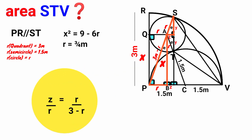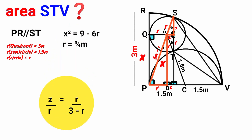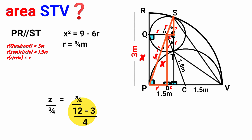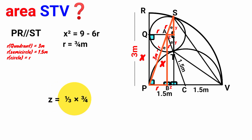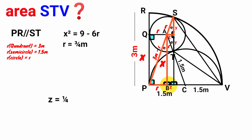So z/r = r/(3 − r). We found r = 3/4, so substituting: z/(3/4) = (3/4)/(3 − 3/4). Now 3 − 3/4 = (12 − 3)/4 = 9/4. So z/(3/4) = (3/4)/(9/4) = 3/9 = 1/3. Multiplying both sides by 3/4: z = (1/3)(3/4) = 1/4. The length of side z is 1/4.